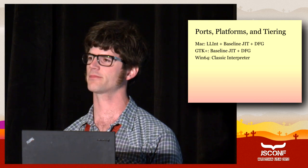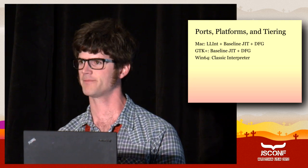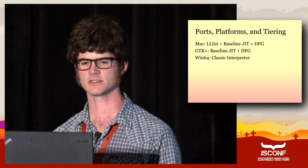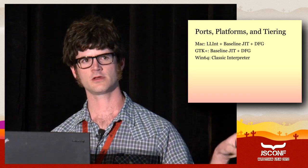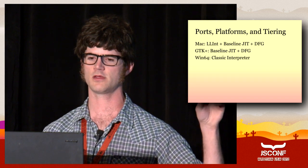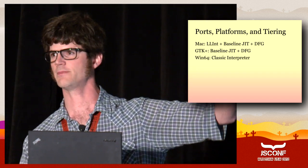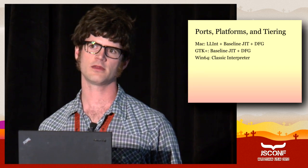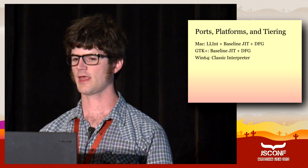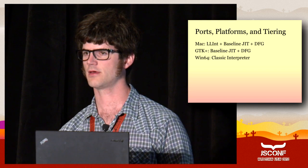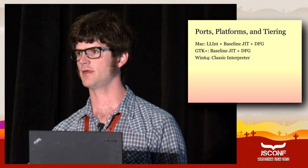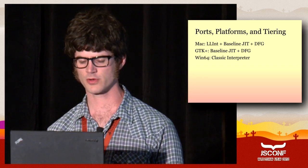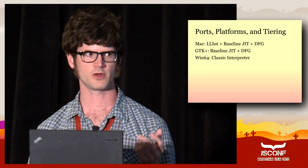As far as combinatorics go, in JavaScript Core now there is the classic interpreter — it's still there — the low-level interpreter, the baseline JIT, and the DFG JIT, and they can exist in various combinations depending on the port. On Mac, x86 32 and 64, and ARMv7, you get LLint plus baseline JIT plus DFG — really what you want. Other ports like GTK haven't caught up yet and only have the baseline JIT and DFG. JIT isn't implemented at all on Windows 64, so you just get the classic interpreter. But it's nice that you have a portable interpreter to run things on even on a strange platform like Windows 64.